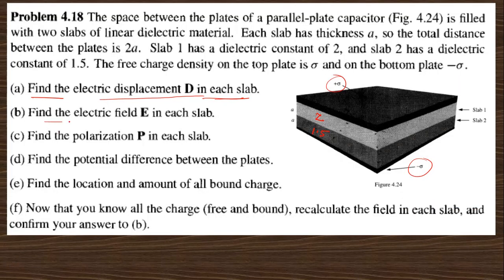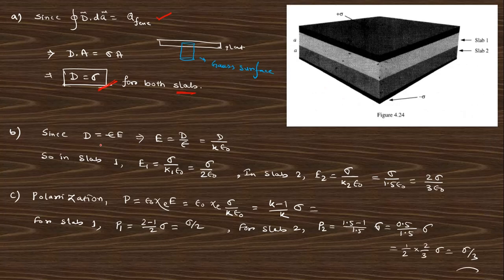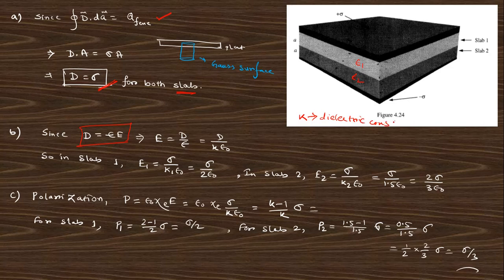The next part asks to find the electric field in each slab. The electric field is related to D by E = D/epsilon. So E = D/epsilon_1 and D/epsilon_2. Therefore, the electric field is sigma/(k1 * epsilon_naught) and sigma/(k2 * epsilon_naught), where k is the dielectric constant.